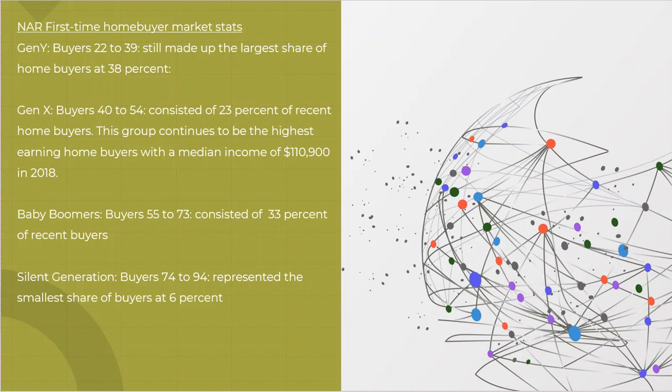Followed by Gen X, who are typically the 40 to 54-year-old age. They are 23% of all the home buyers. They are the highest earning home buyers with a median income of over $110,000 a year. Once again, kind of logically makes sense in the progression of life. In that 40 to 54-year-old age, they now have probably into their second job or a second promotion. And they are the largest income grossing group there is.